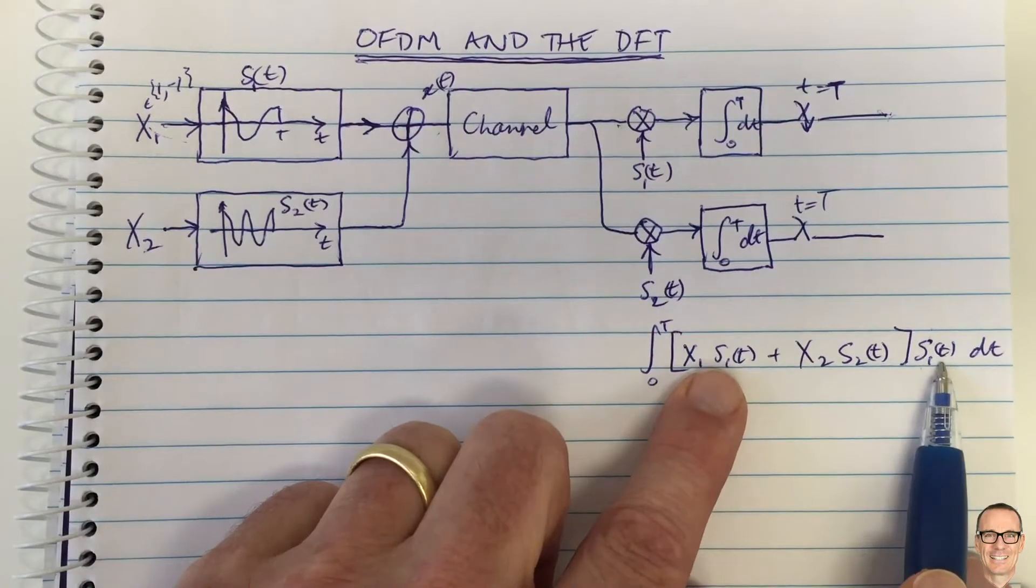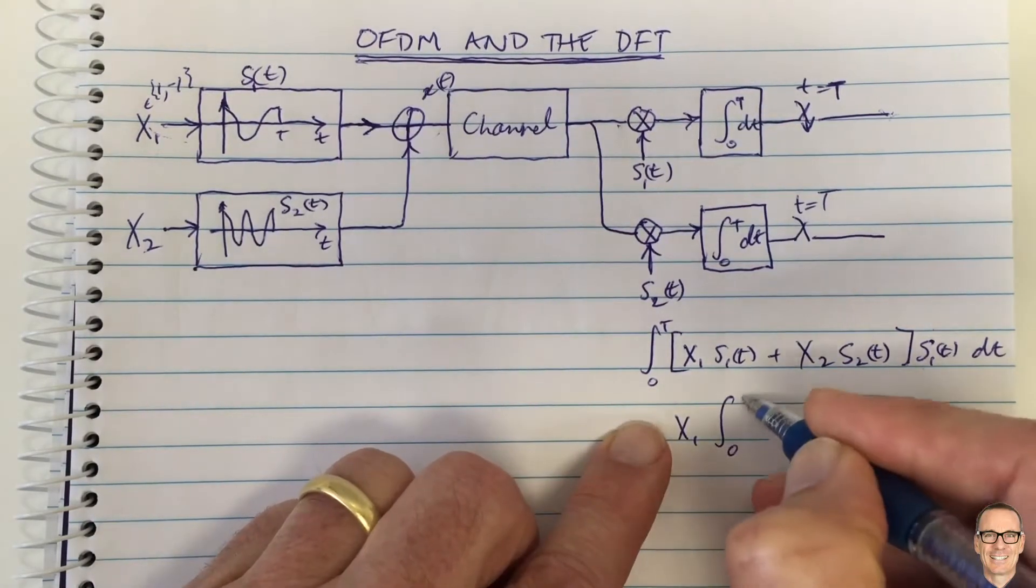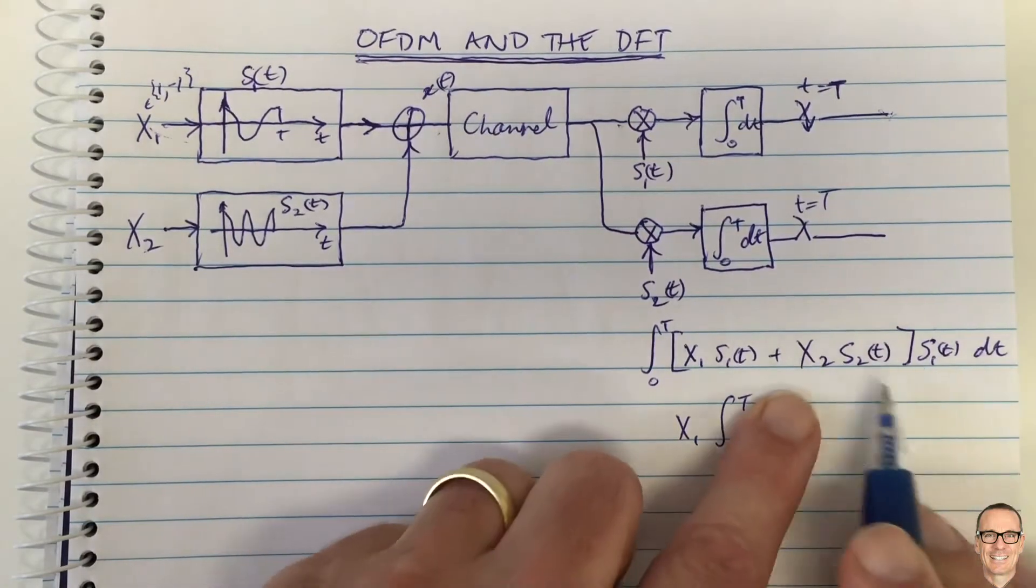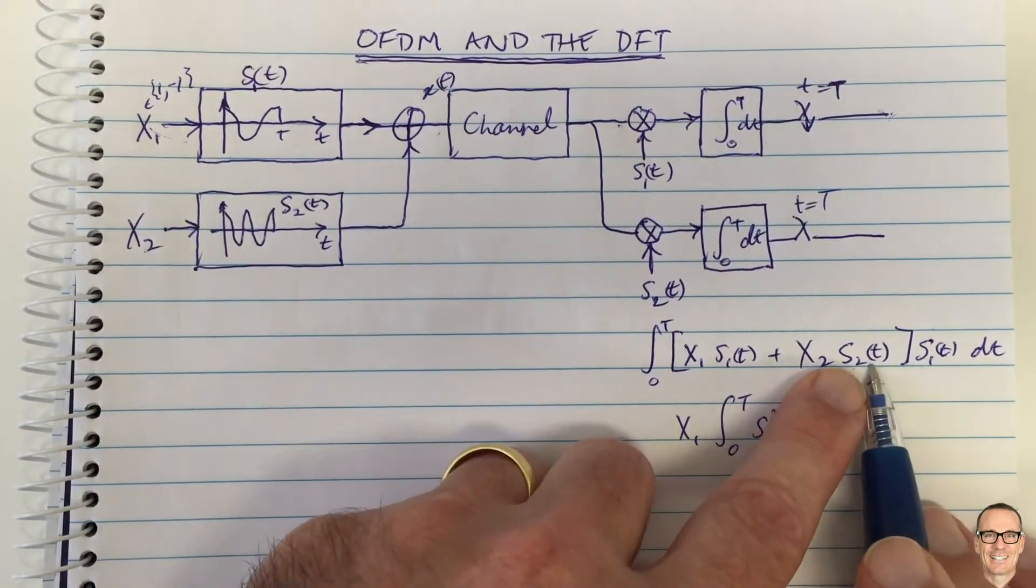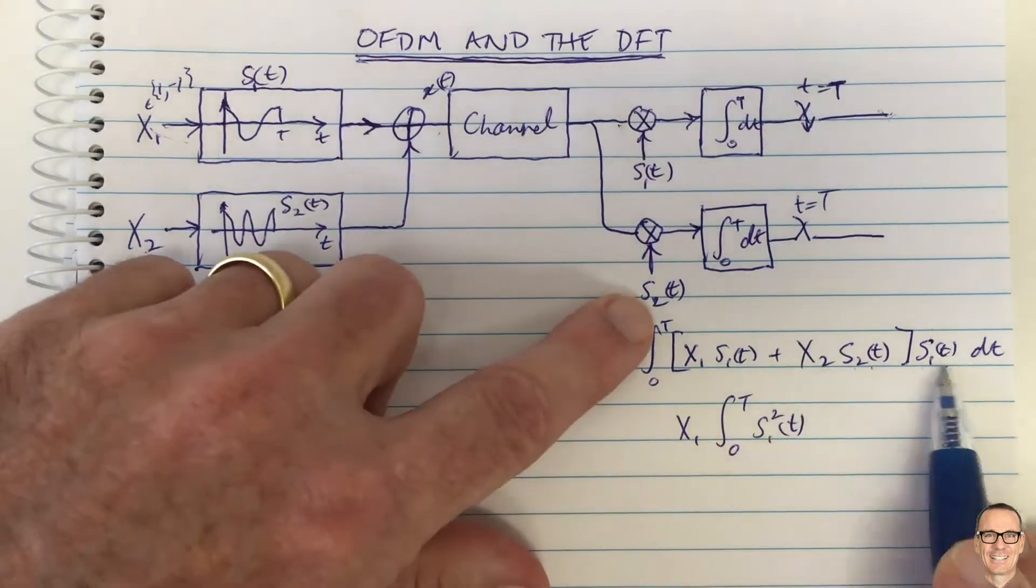What do we have here? We're going to have s1(t) times s1(t), so we're going to have x1 out the front of the integral of s1 squared(t). Then the x2, we're going to have s2 times s1.